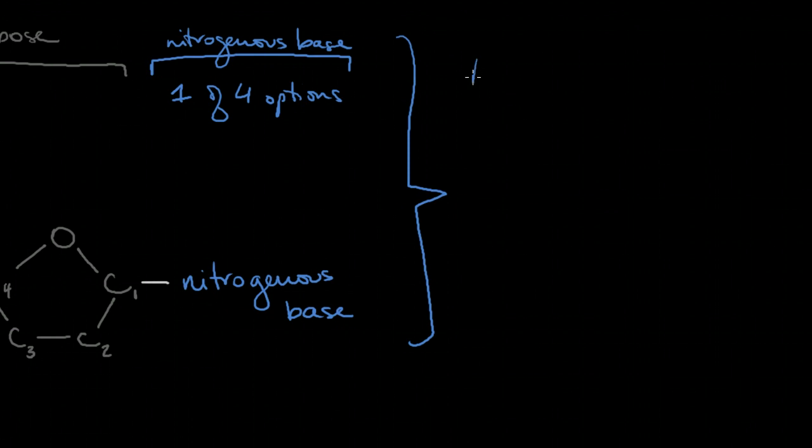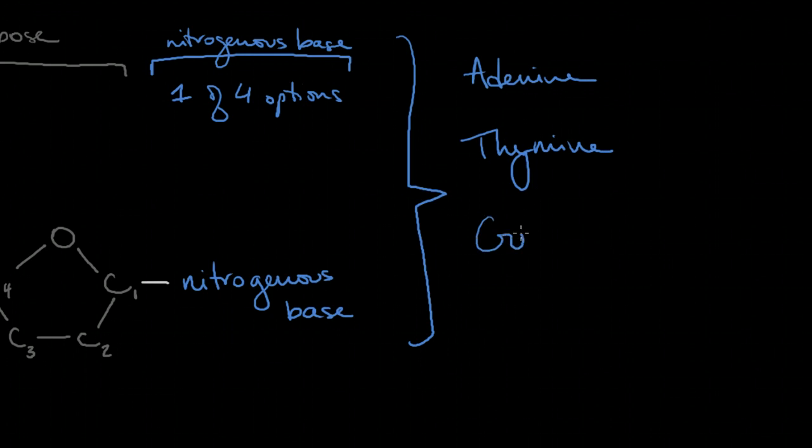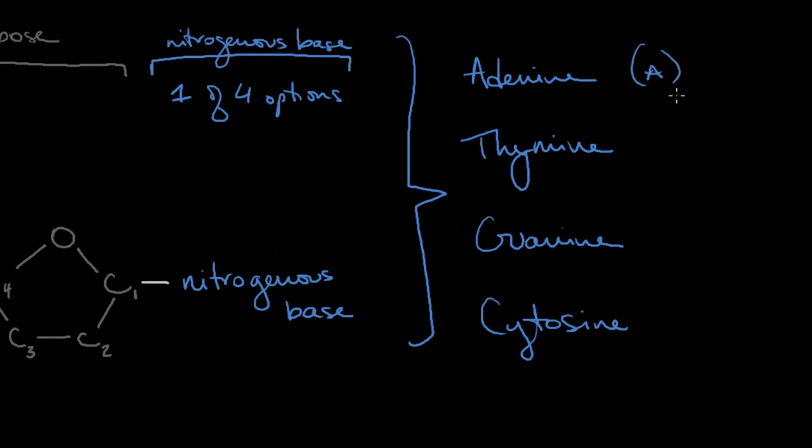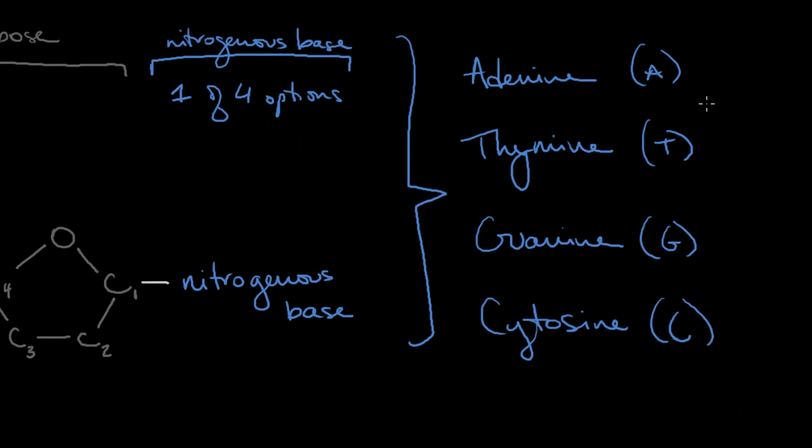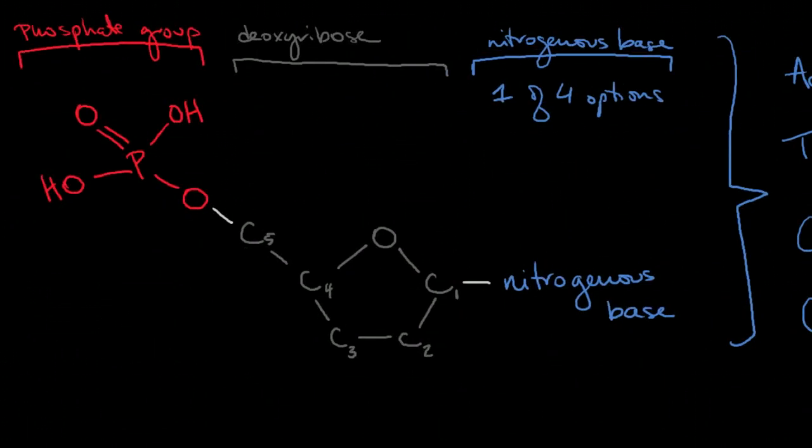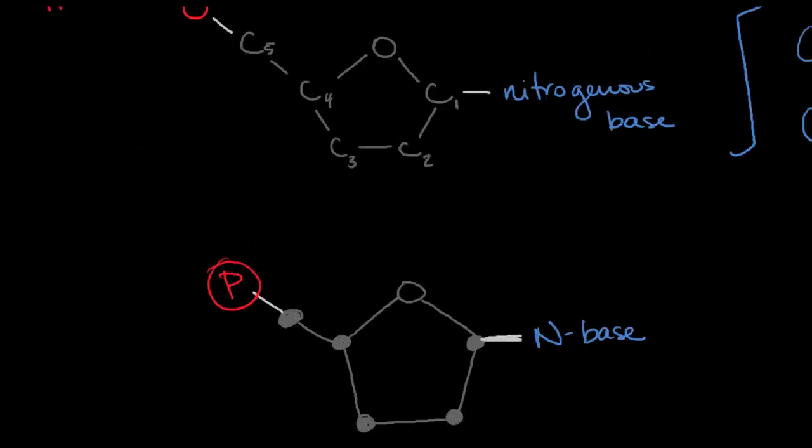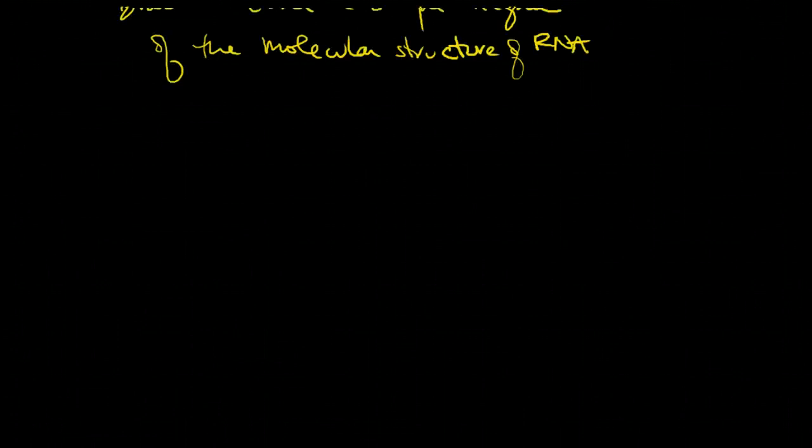And so when we talk about these four options, these four options are adenine, thymine, guanine, and cytosine, also known as A, T, G, and C. Okay, so those are the four options, and that's what makes the four different nitrogenous bases.